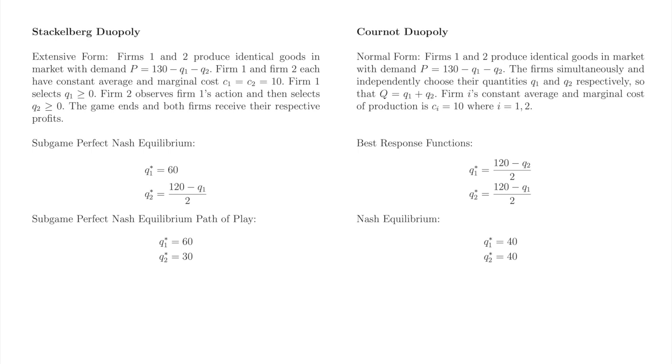Finally, the Cournot-Nash equilibrium quantities are also a Nash equilibrium in Stackelberg duopoly, albeit not subgame perfect, since they are mutual best responses. However, the Cournot-Nash equilibrium quantities do not form a subgame perfect Nash equilibrium, since firm 1 cannot credibly commit to producing 40, and firm 2 cannot credibly threaten to produce 40. As soon as firm 1 produces 60, firm 2 will back down and produce 30.